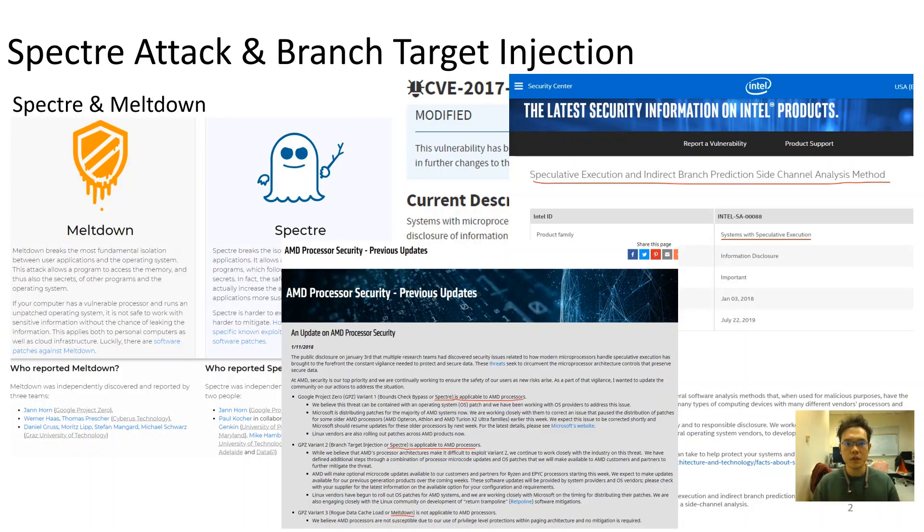Around early 2018, multiple groups of researchers reported a series of CPU vulnerabilities named Spectre and Meltdown. Such vulnerabilities widely affect microprocessor security among different vendors via a new class of microarchitecture attacks called transient execution attacks.